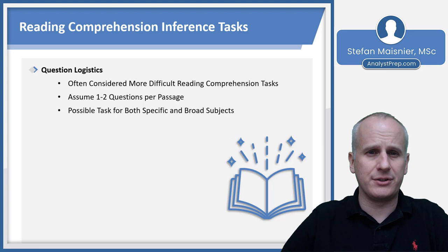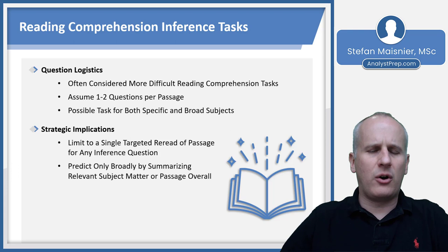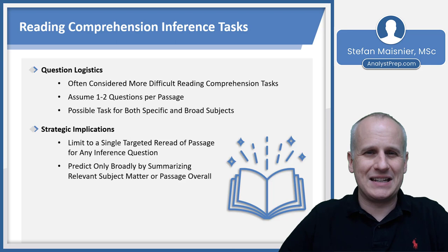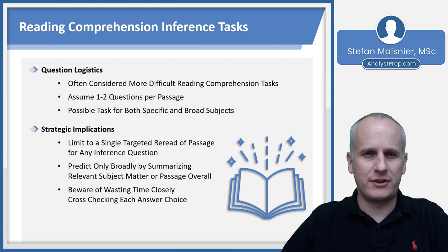They can ask you inferences about the passage overall or about specific details and concepts within the passage. Strategically, you have to hold yourself to a really tight, single targeted reread of the passage for any inference question, because otherwise you may spend way too much time searching for information. You can only predict here by broadly summarizing the relevant subject matter or the passage overall, because you're not going to be able to generally predict specifically what the logical inference is. You also have to be aware of wasting time by closely cross-checking each answer choice — the answer choices are not going to be in the passage necessarily for a correct inference answer.